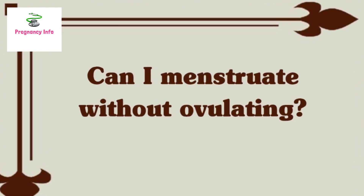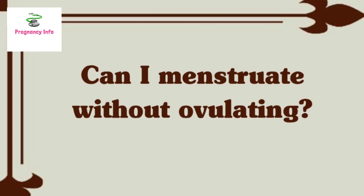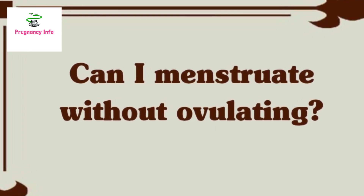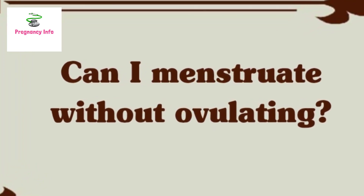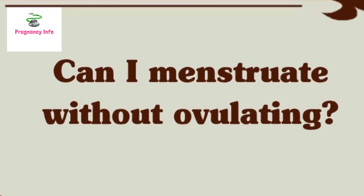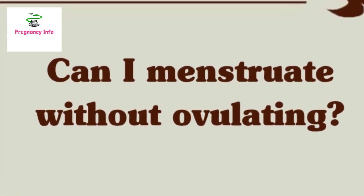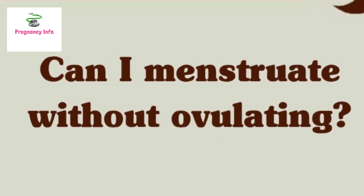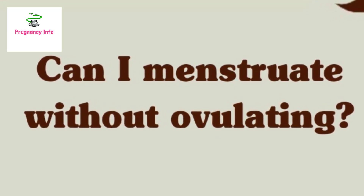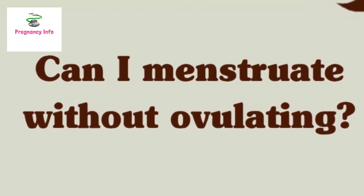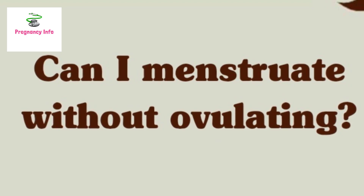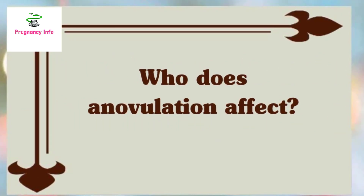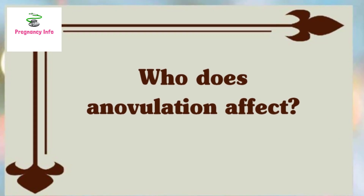Can you have menstruation without ovulation? Medically, menstruation happens when an egg released from your ovary isn't fertilized, so the uterus sheds its lining. You can technically bleed — experience a period — without ovulating. This is called abnormal uterine bleeding (AUB) or anovulatory bleeding.